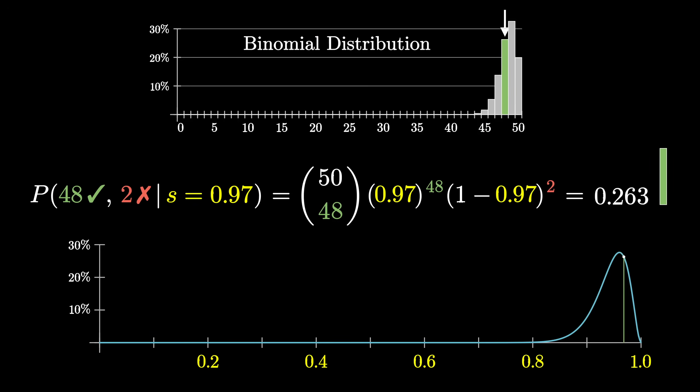As s increases, it kind of peters out, going to 0 as s approaches 1, since someone with a perfect success rate would never have those two negative reviews. Also, as you move to the left, it approaches 0 pretty quickly. By the time you get to s equals 0.8, getting 48 out of 50 reviews by chance is exceedingly rare. It would happen 1 in 1000 times.